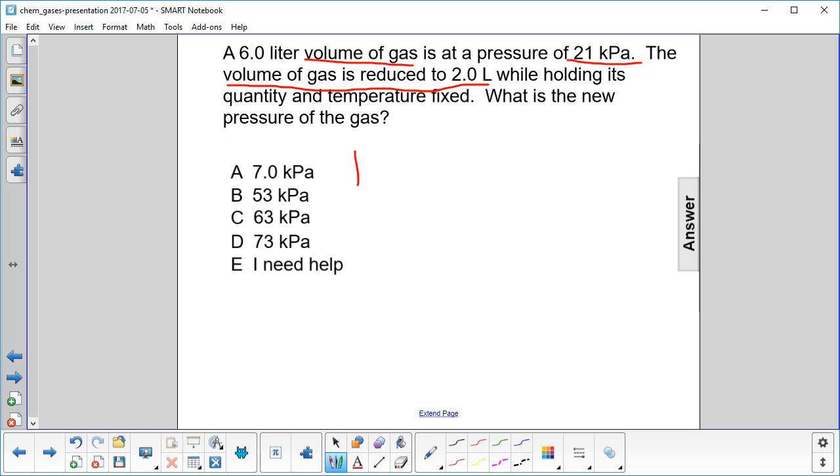Well, we kind of guessed right there it is Boyle. P1 V1 equals P2 V2.